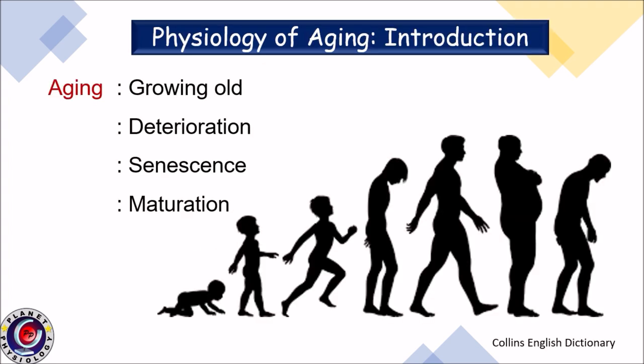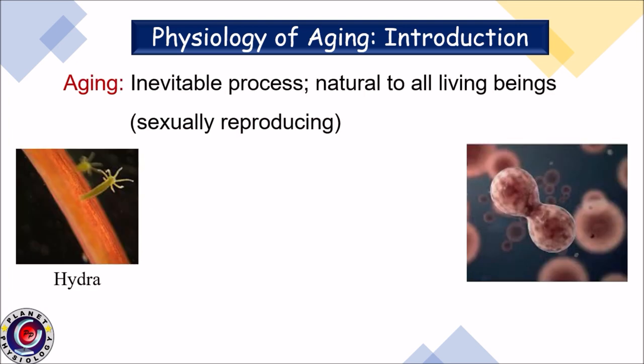According to the Collins English Dictionary, aging means growing old, deterioration, senescence, and maturation. It is an inevitable process, natural to all living organisms which reproduce by sexual means. Species like hydra, which reproduce by binary fission, are said to be immortal. But why do sexually reproducing animals have to undergo the aging process? We will come to know that a little later.